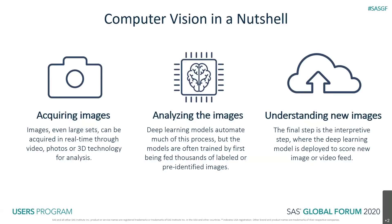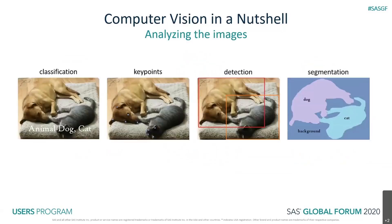Third, understanding new images using the analysis model from the previous step, by deploying the model to the place where images are generated, such as an edge server connected to a camera. In the next slide, I'm going to use the photo of a dog and a cat of mine to illustrate the differences among some computer vision tasks.